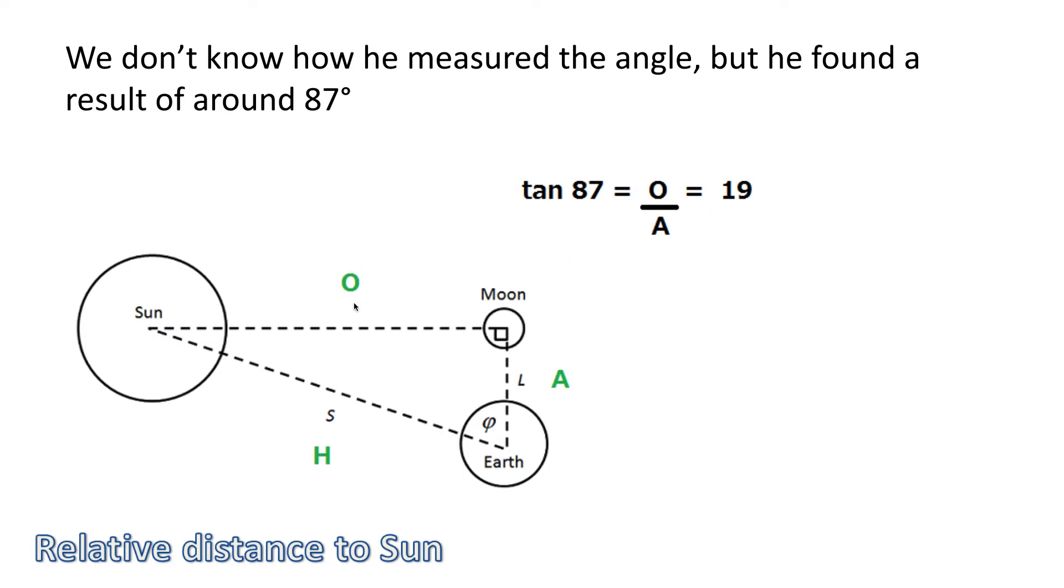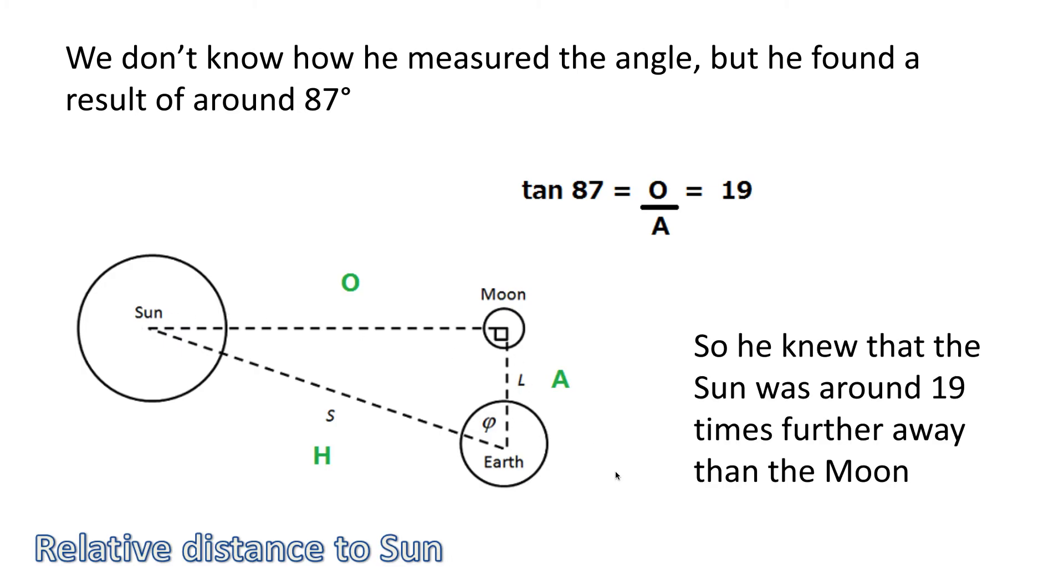So what does that mean? Well, it means that the opposite is 19 times bigger than the adjacent, which implies that the sun is 19 times further away than the moon is. That's what he thought.